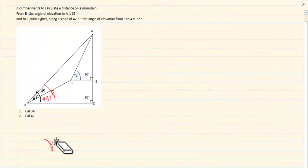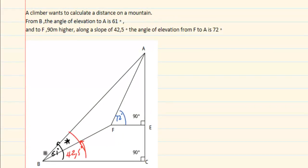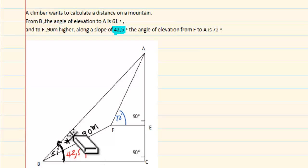Let us do the following example. A climber wants to calculate a distance on a mountain. From B, the angle of elevation to A is 61 degrees, and the angle of elevation to F is 42.5 degrees. They tell us it is 90 meters higher, meaning the distance covered is 90 meters. The angle of elevation from F to A is 72 degrees. If I want to calculate BA, how do I go about it?